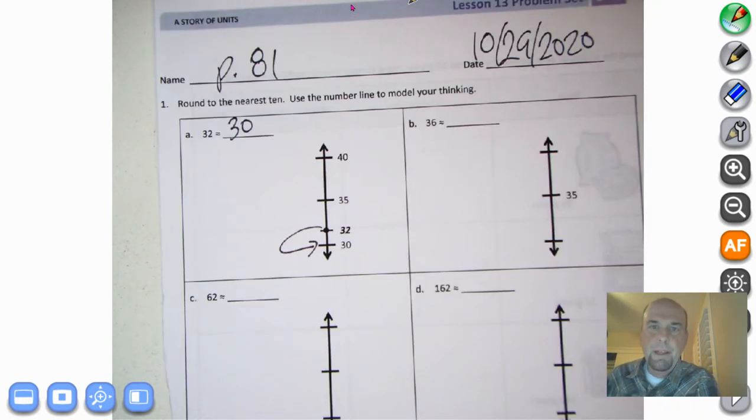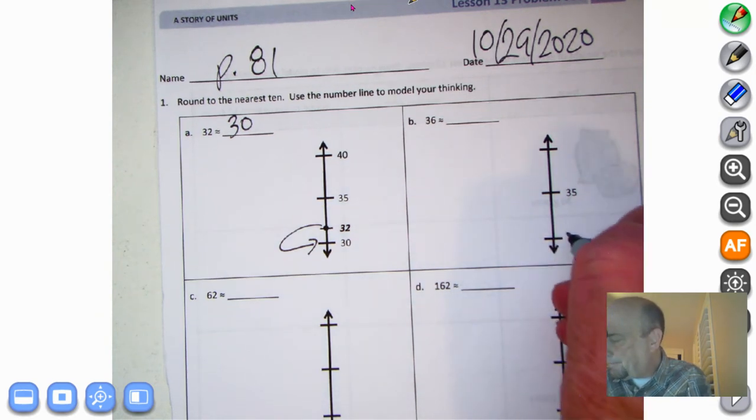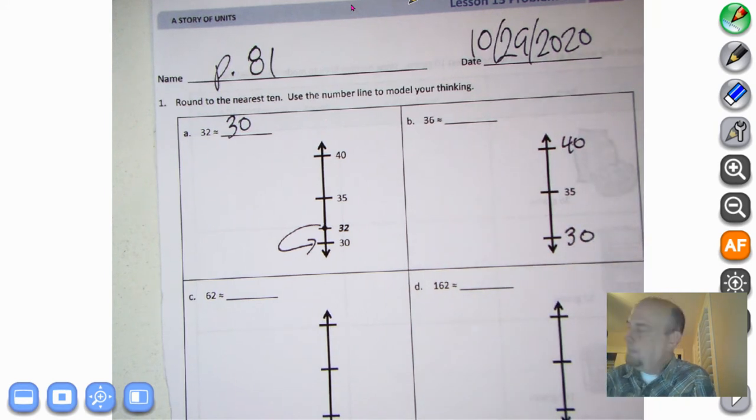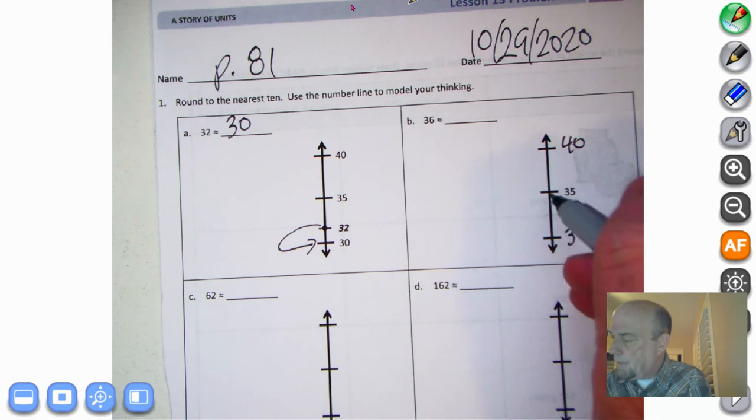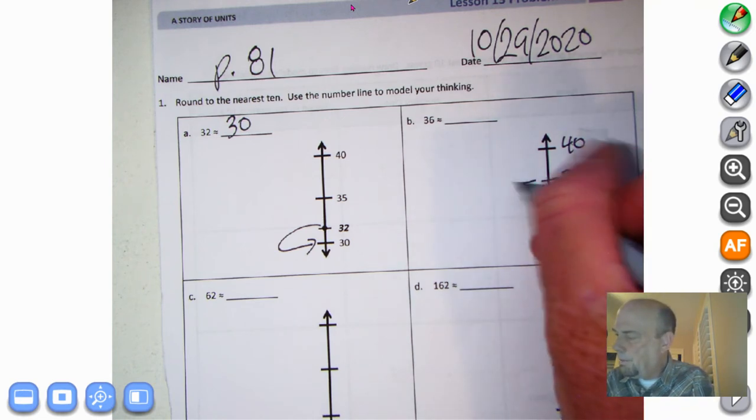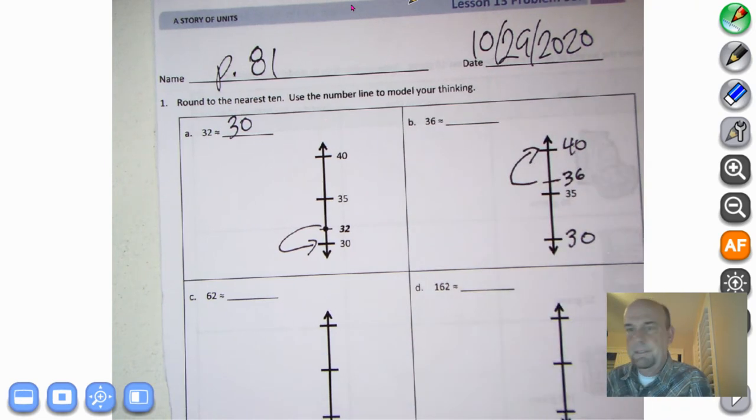Let's go over here. 36. Okay, think about 36, think about the two 10s it's between, it's sandwiched between. So sandwiched between 30 and 40. Now, where is 36 going to wind up? Well, use your noggin. Here we go. 31, 32, 33, 34, 35, 36. It's above the midway point. Ding, ding, ding.